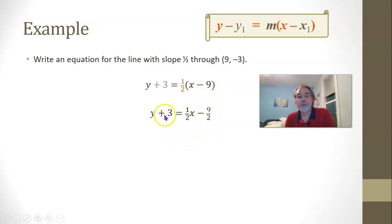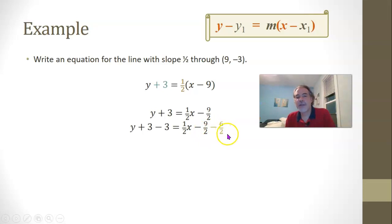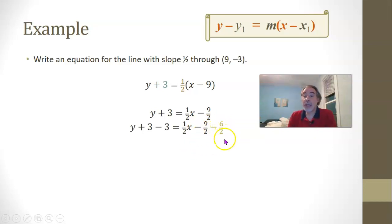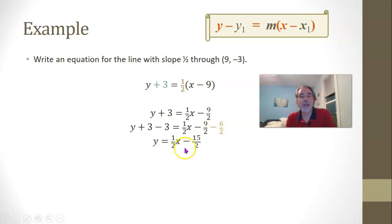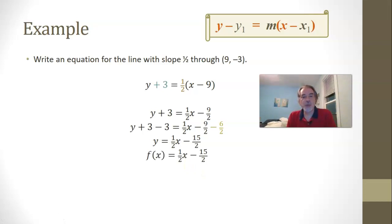If I subtract 3 on both sides — writing 3 as 6 halves so they have the same denominator — then negative 9 halves minus 6 halves gives minus 15 halves. So y equals 1 half x minus 15 halves. In function notation, that would be f of x equals 1 half x minus 15 halves.